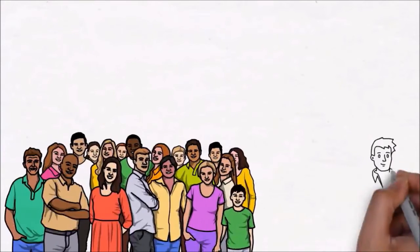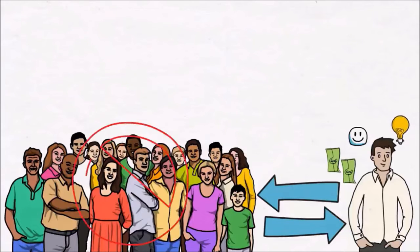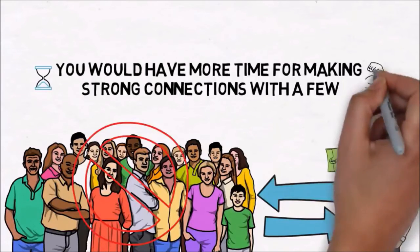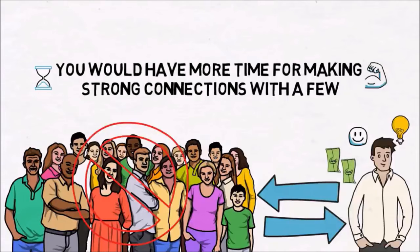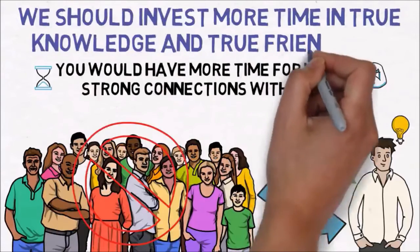Having too many friends means that you only focus on the first two types. You like to have fun and achieve professional and financial success in life, and that is why you focus on these two types of friends who help you in this. If you focus your life on wisdom and virtue, you wouldn't have so much time for the first two types of friends. You would have more time for making strong connections with a few select people. Meaningful friendships require time and effort. Aristotle teaches us to invest less time in having fun and in climbing the ladder of financial success, and instead we should invest more time in true knowledge and true friendships.